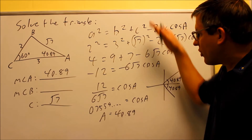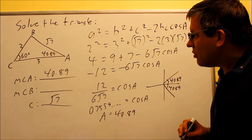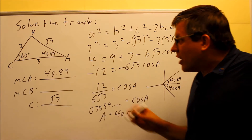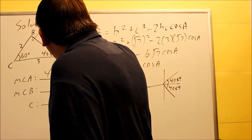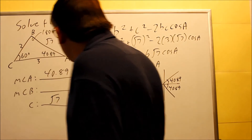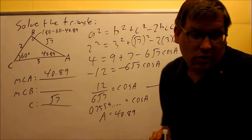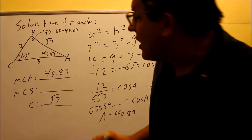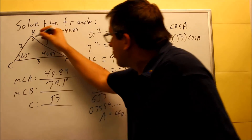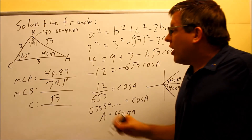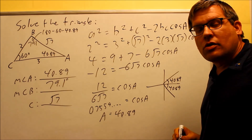We've confirmed angle A is 40.89 degrees two different ways. The only remaining step is to find angle B. We do 180 minus 60 minus 40.89, which gives 79.11 degrees. So angle B is 79.1 degrees. We've now found all the missing information — all three sides and all three angles — and the triangle is completely solved.